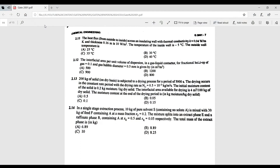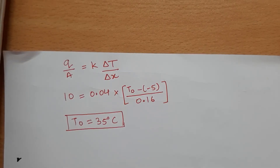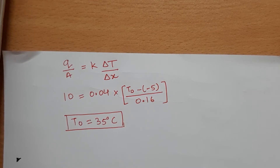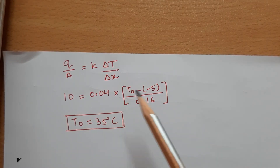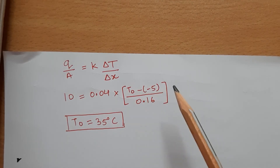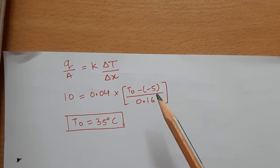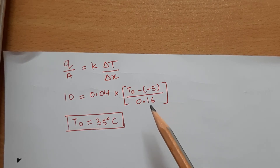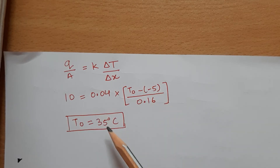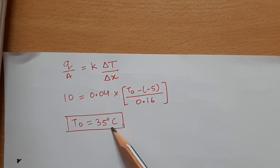Question 2.11: the heat flux across an insulating wall is given along with thermal conductivity and thickness. The inside wall temperature is given and we must calculate the outside wall temperature. Using heat flux Q/A = k·ΔT/Δx, and substituting the known values of heat flux, k, inside temperature, and Δx, the outside wall temperature is 35°C.